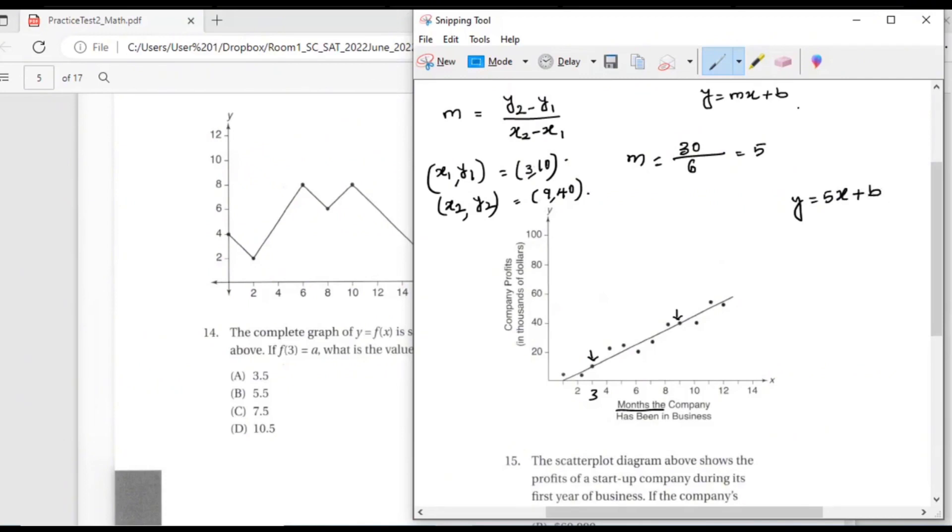So what is my equation? y equals 5x plus b. What's the one more thing we still have to figure out? The b value. In order to figure out the b value, we can substitute any of these points for x and y. Substitute the first point. What is your y value? 10. And what is your x value? 3. So 10 equals 15 plus b, and then b equals negative 5. We have an equation.